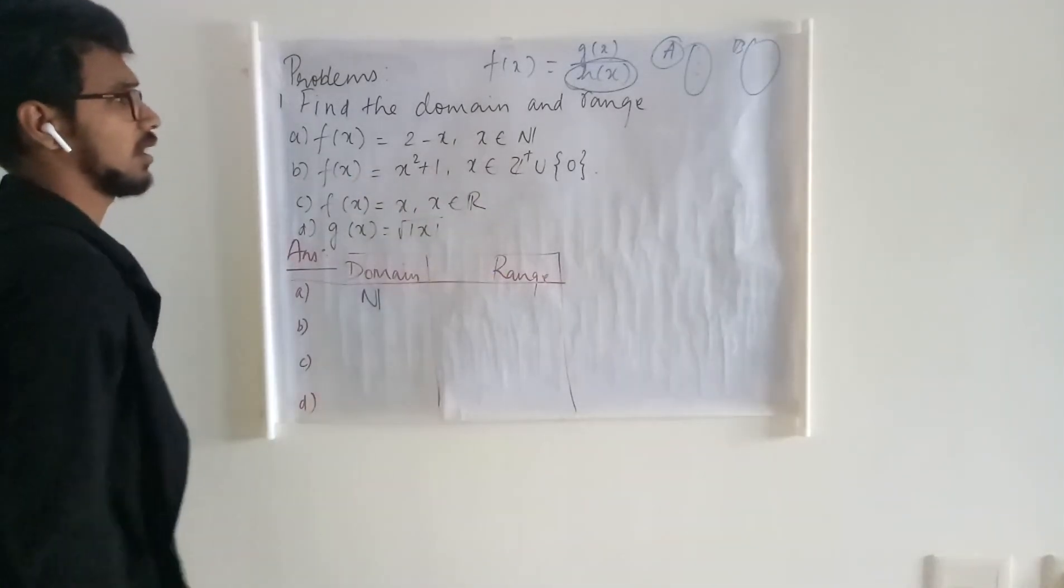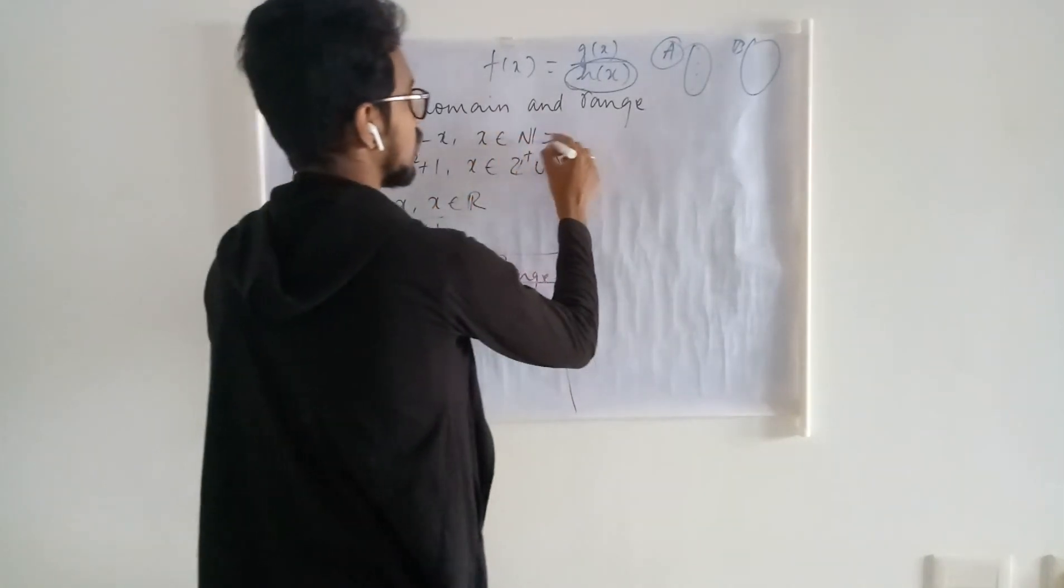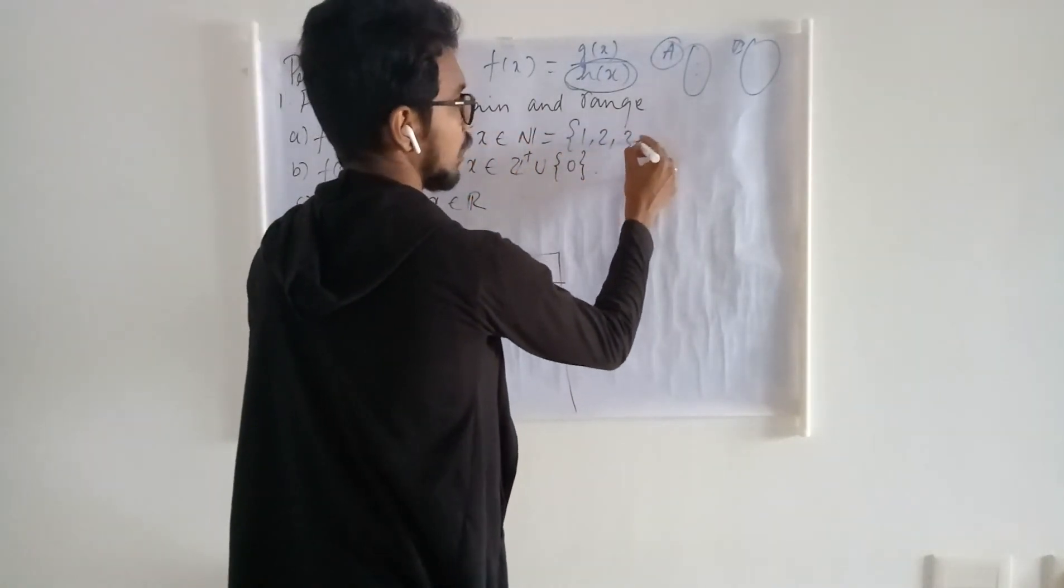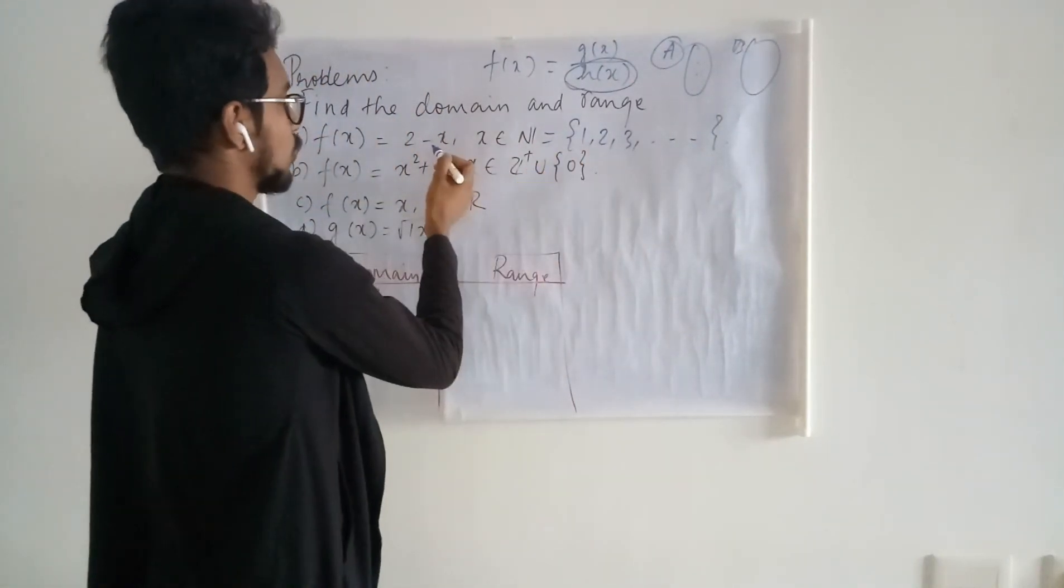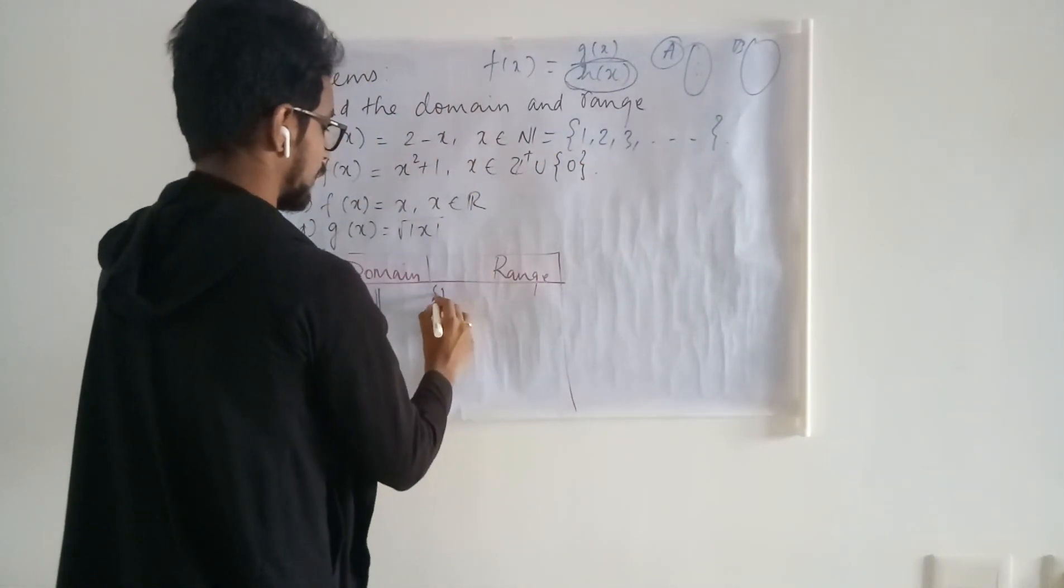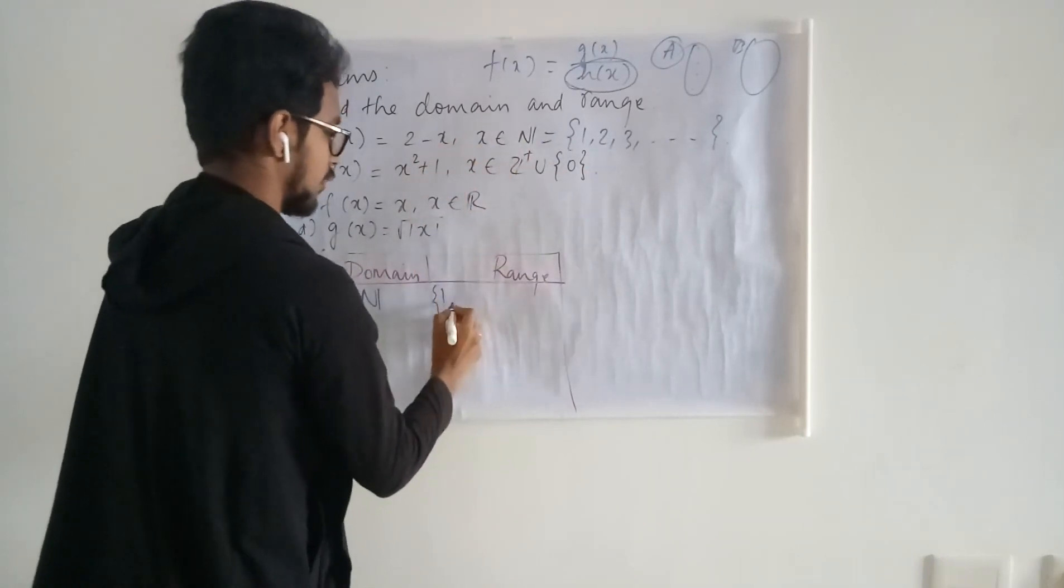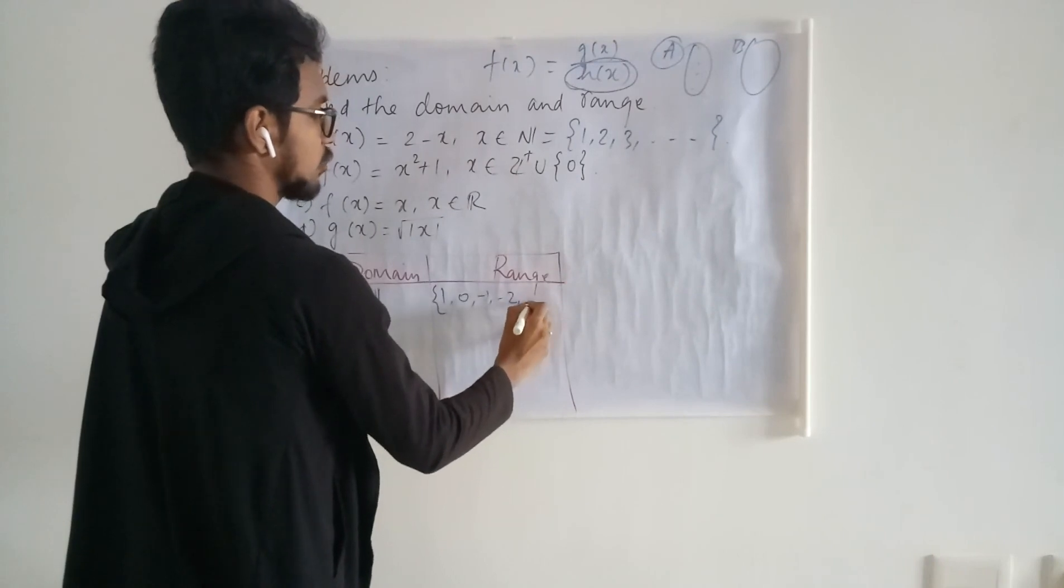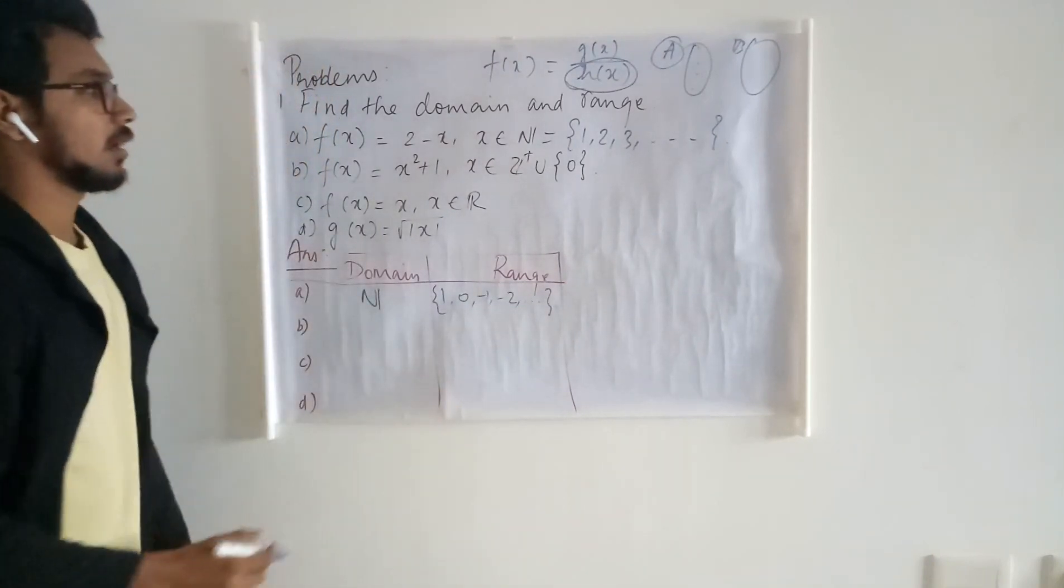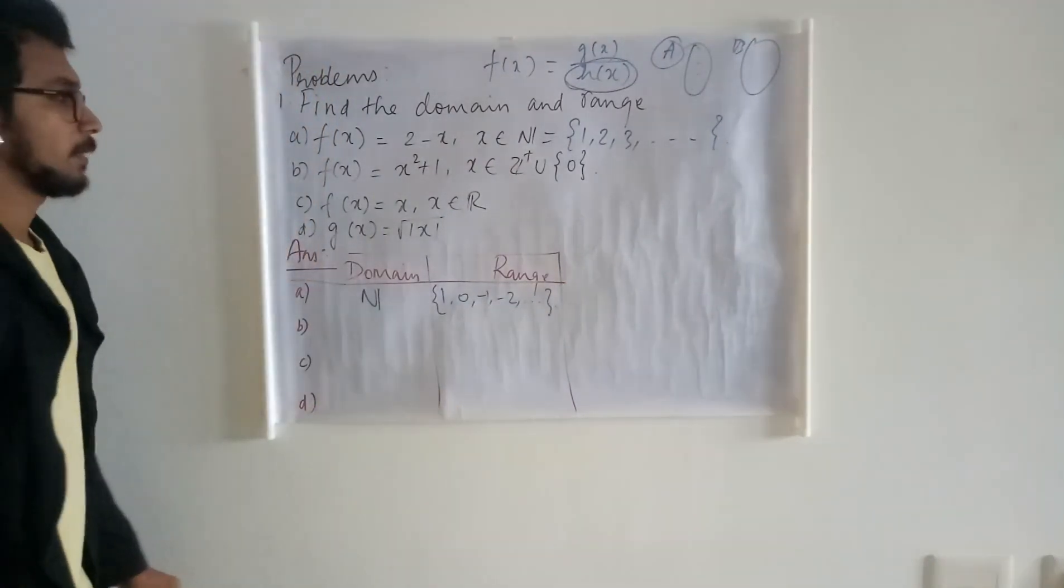Then what is the range? Here N is 1, 2, 3 and it goes on like this. So when you substitute 1, I will have 1. When you substitute 2, I will have 0. When you substitute 3, I will have minus 1, then minus 2 and it goes on like this. This is the range set for the function.